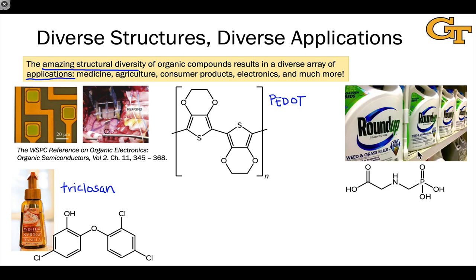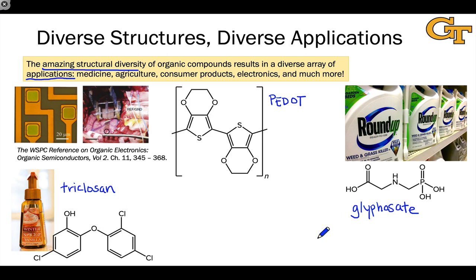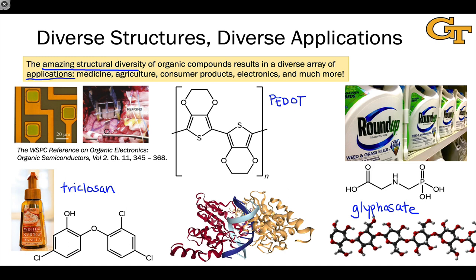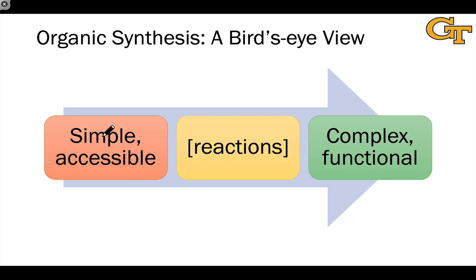The structure on the right is glyphosate, a key component of the weed killer Roundup. Without organic synthesis, none of these structures would be possible because none of them occur naturally — and certainly none occur naturally in the amounts we need to make use of their functionalities at the scale required. The molecules of biochemistry — things like polysaccharides, proteins, and nucleic acids — are also organic molecules, and so organic synthesis is important to create analogs of these key biomolecules.